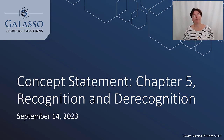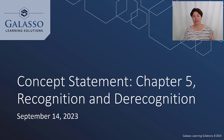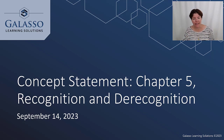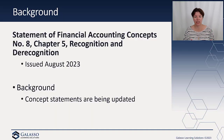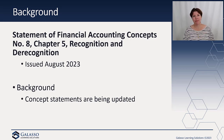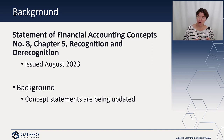This chapter is, based on the topic, going to cover recognition and derecognition criteria for when an item should be incorporated or removed from a set of financial statements. This was issued in August of 2023, and the concepts for recognition were originally in concept statement number five, which covers measurement.